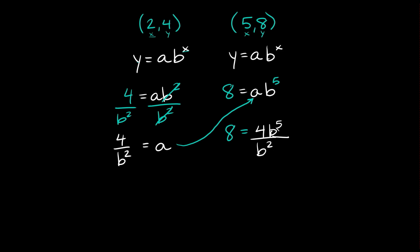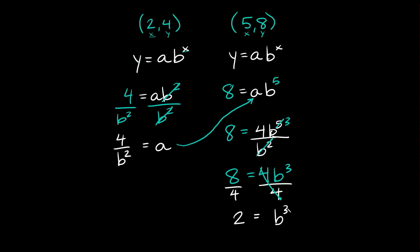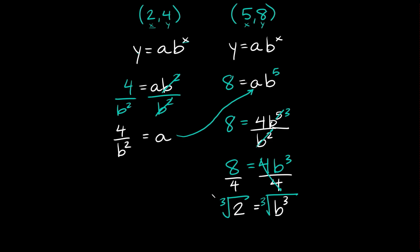Since we have 5 b's on top and 2 b's on the bottom, those 2 b's cancel 2 of the b's up top, leaving us with 3 b's. So we get 8 is equal to 4b cubed. To solve for b, divide both sides by 4 — those cancel — and we get b cubed is equal to 2. Now to get rid of that cubed exponent, we take the cube root of both sides. The cube root and the cubed exponent cancel out, so b is equal to the cube root of 2.